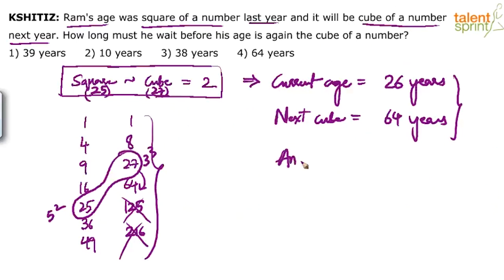He's not asking me to find out at what age his age will be a cube of a number. The question is how long from now should he wait so that his age becomes a cube. That is nothing but 64 minus 26, which is 38. So, 38 is the final answer.